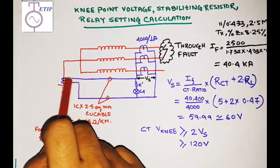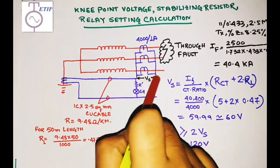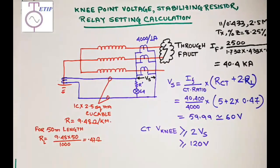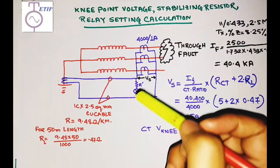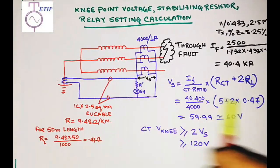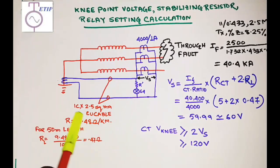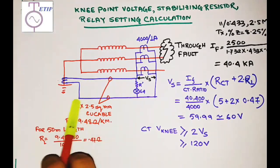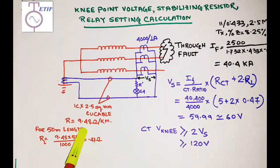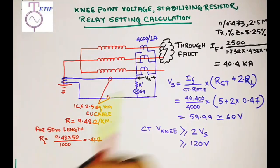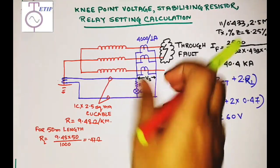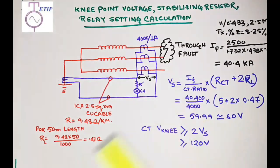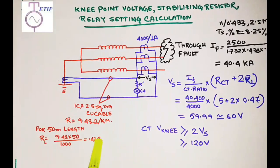There is a possibility that the CTs are placed away from the relay. The conductors connecting them are copper wire and have some resistance — this is the lead resistance Rl. In industry, single-core 2.5 sq. mm copper cables are used, which have a resistance of around 9.48 to 9.5 ohm per kilometer. Suppose the relay is 50 meters away from the CT; then Rl = 9.48 × 50 / 1000 = 0.47 ohm for 50 meters.